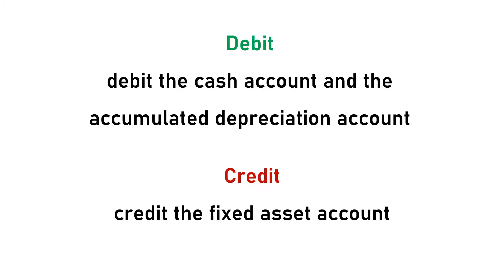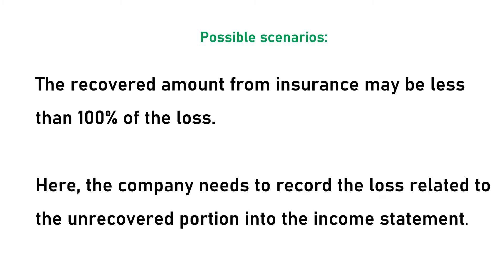If the company receives an insurance claim from the insurance company amounting to 100% of the loss value of the fixed asset, the company can make the journal entry for the insurance claim received by debiting the cash account and the accumulated depreciation account, and crediting the fixed asset account. In this journal entry, the credit of the fixed asset is to remove it from the balance sheet, as it should already have been destroyed by an accident such as fire.